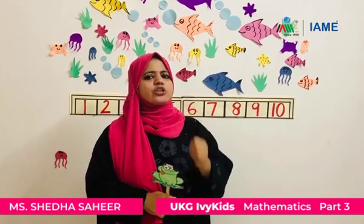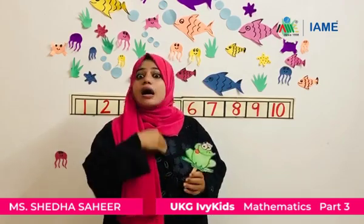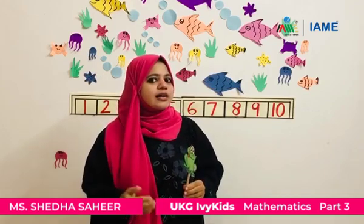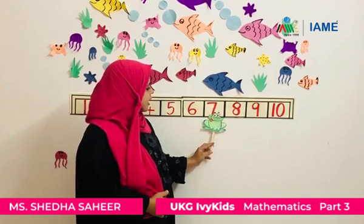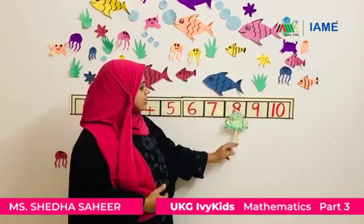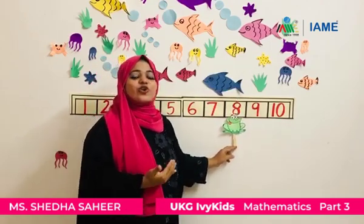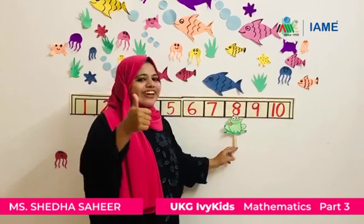So here, I am going to ask you a few questions and you are going to answer me. Okay? Are you ready? So looking into this number chart, you have to tell me what is the number that comes after seven. So let's see — I put the froggy here. Froggy has jumped to eight. So which is the number that comes after seven? Very good. It's eight.